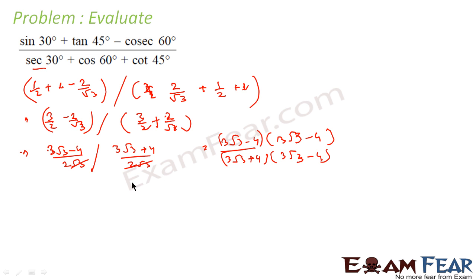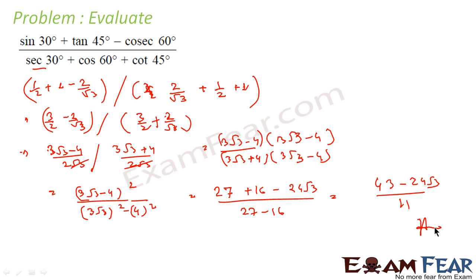So what we get here is (3√3 - 4)² divided by a² - b², because (a + b)(a - b), so this becomes (3√3)² - 4². Let's solve this: (3√3)² becomes 27 plus 4² which is 16 minus 2 times 3√3 times 4, that is 24√3, by (3√3)² which is 27 minus 4² which is 16. So we get (43 - 24√3)/11.